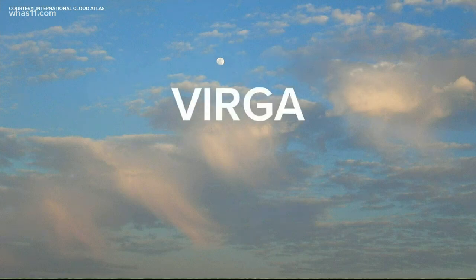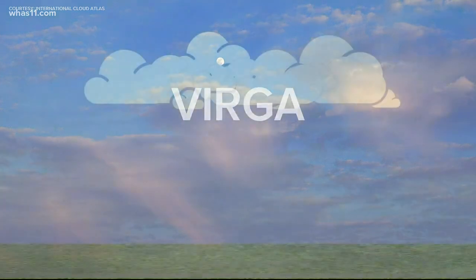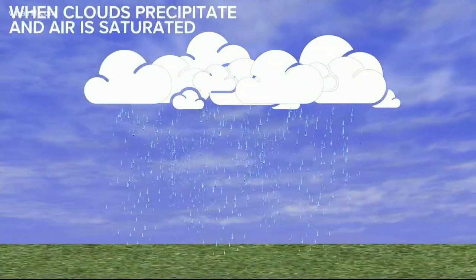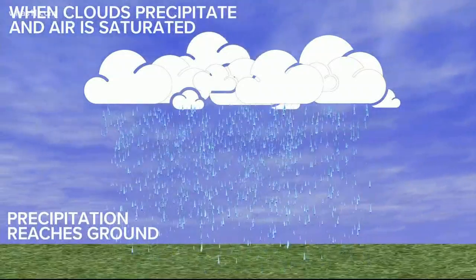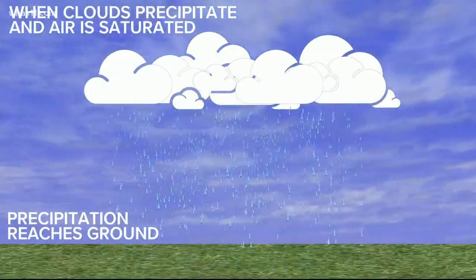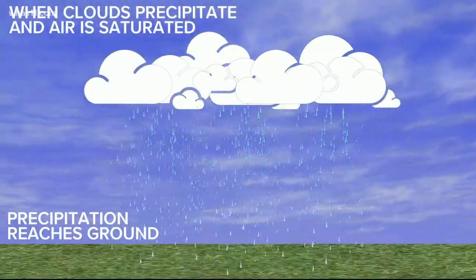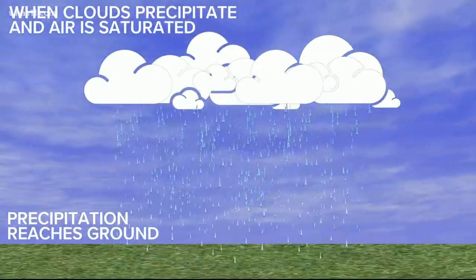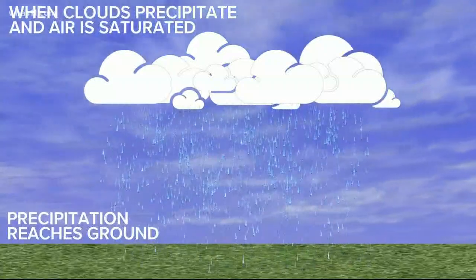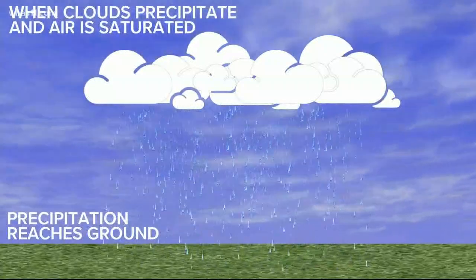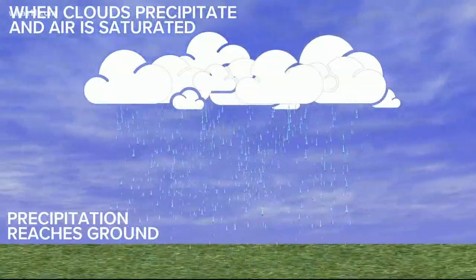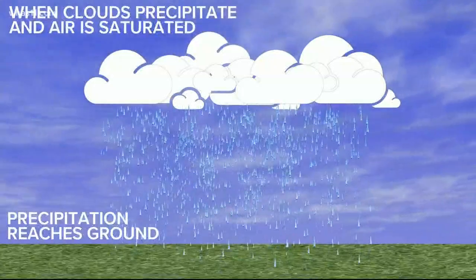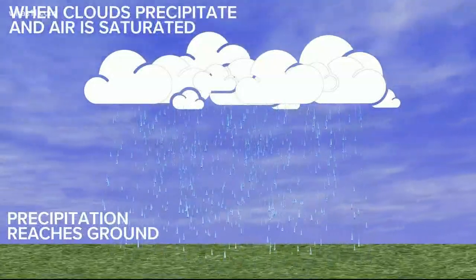What is verga? How does it form? Let's learn. Ideally, when a cloud drops precipitation, the air is saturated. Saturation basically means the air has reached its maximum water vapor content given the temperature and atmospheric pressure. When the air is totally or near saturation, falling precipitation is able to reach the ground.